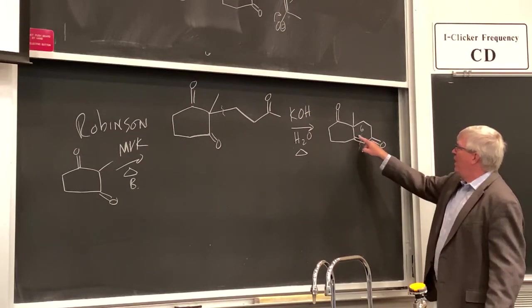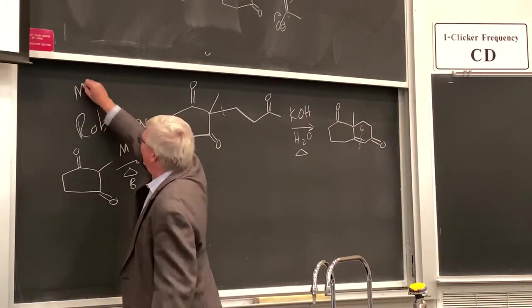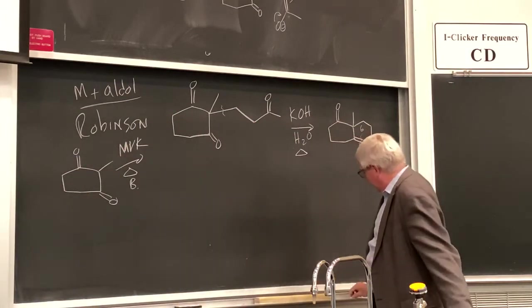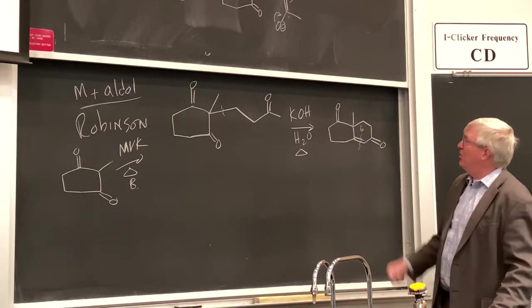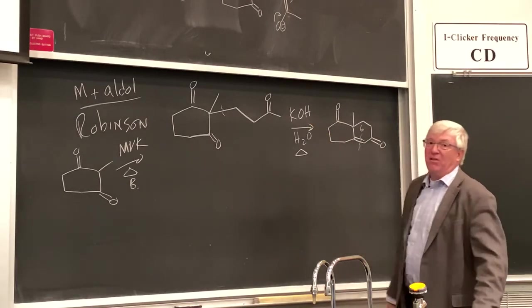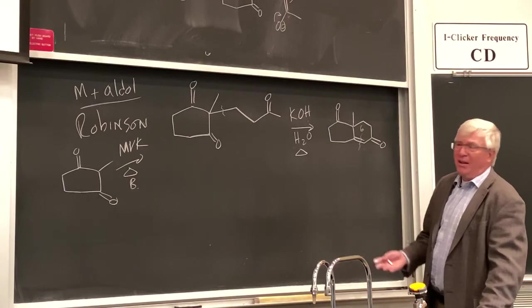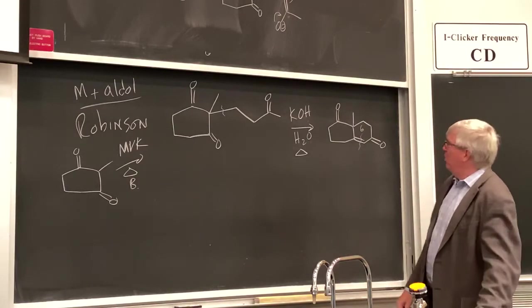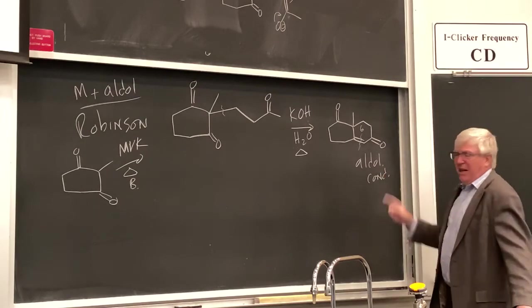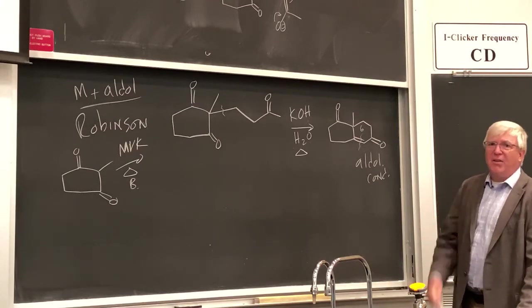So what is this? Well, that will be what? An aldol condensation product. So the Robinson is really a combination of Michael plus aldol. But you have to see the two separately and treat them separately mechanistically. And in tandem, these two reactions on the same conditions, right? Base, reversible conditions. It's a relatively weak base compared to some of the other bases we've been using, right? Hydroxide or methoxide aren't nearly as strong as LDA or butyl lithium. So, and then we're in water. So these are reversible conditions. But if you see the aldol condensation product right here, you begin to conquer this problem.